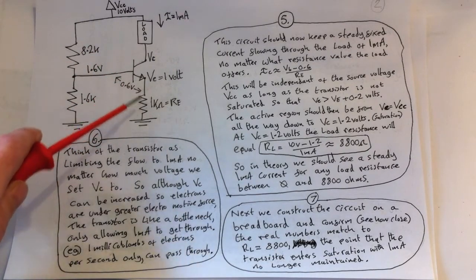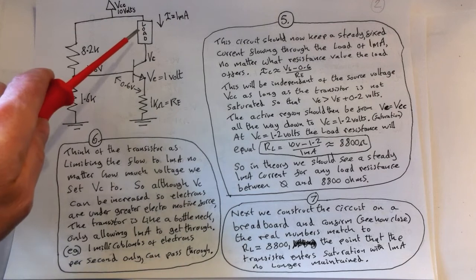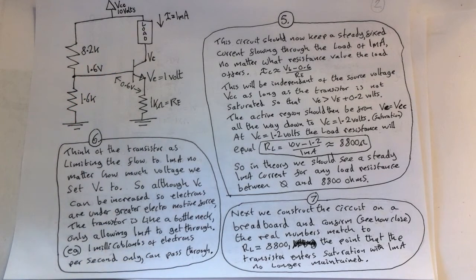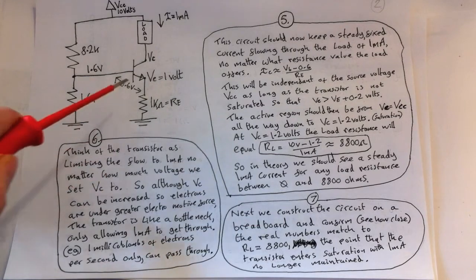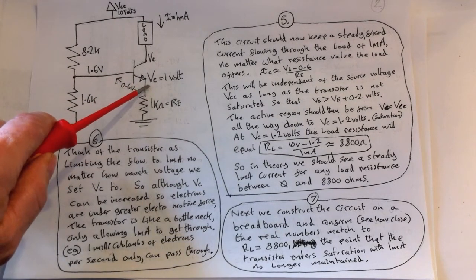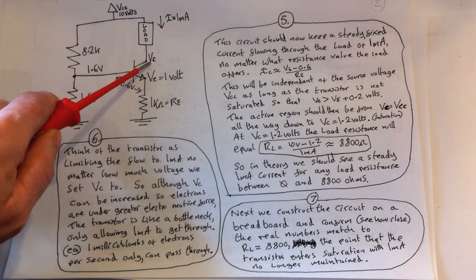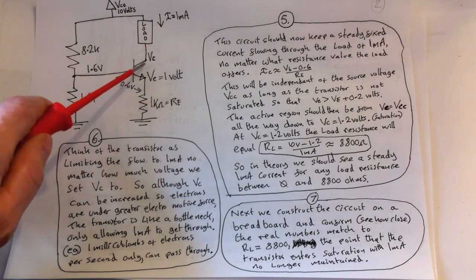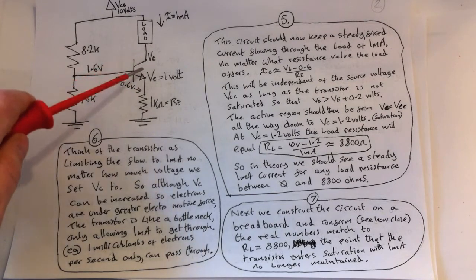Whatever the current flowing through RE is is always going to be the same current flowing through the load. This will be independent of the source voltage VCC as long as the transistor is not saturated, so the voltage of the collector here has to be greater than this voltage plus 0.2. So that's the kind of gap. Once this difference in voltage becomes really small, you've got a short there.